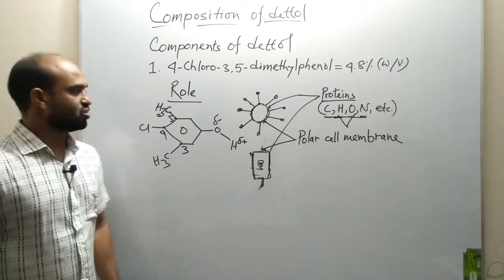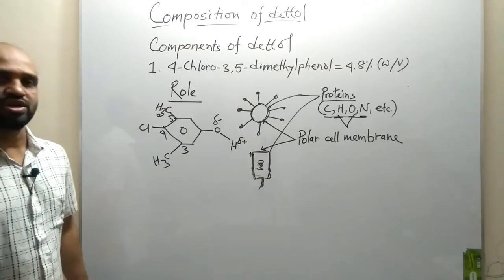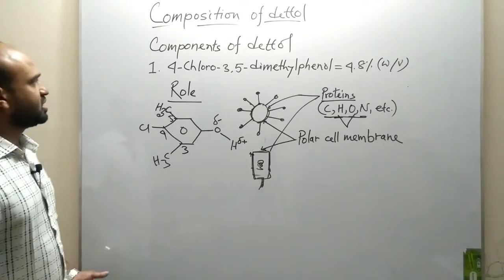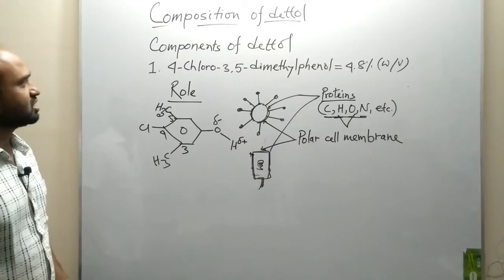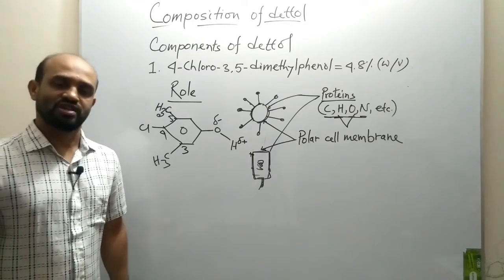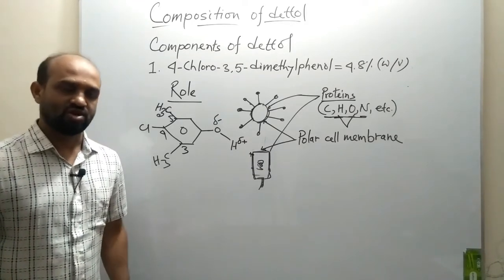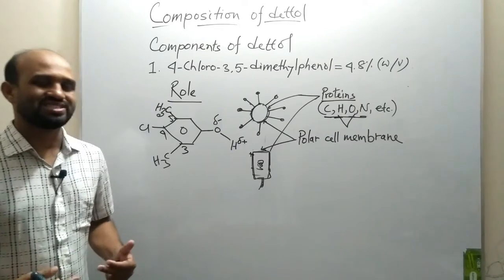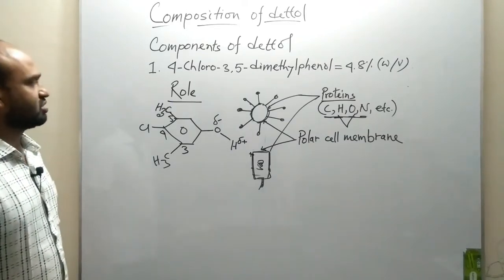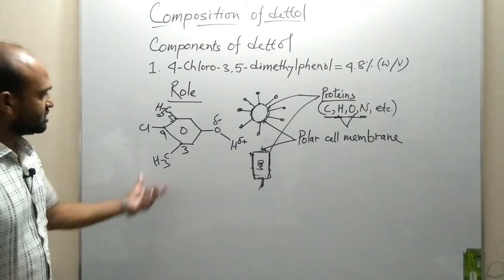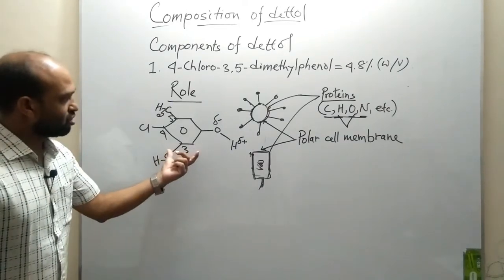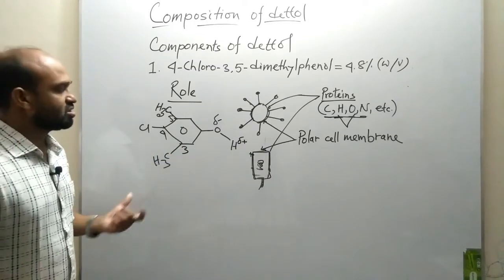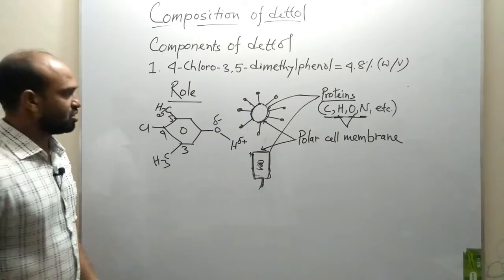Dear students, we should know the role of the main component of Dettol. The main component is 4-chloro-3,5-dimethylphenol. So how does it kill the germs? This 4-chloro-3,5-dimethylphenol is the main component of Dettol.